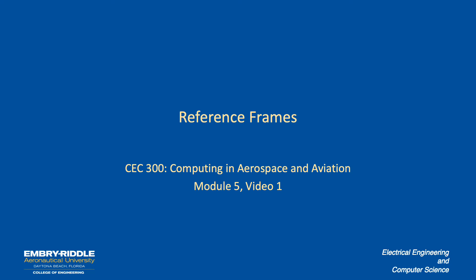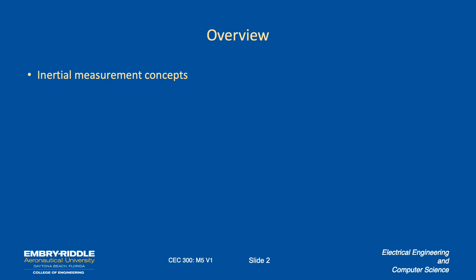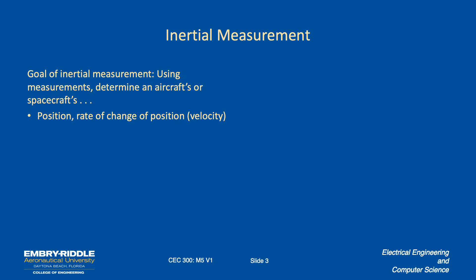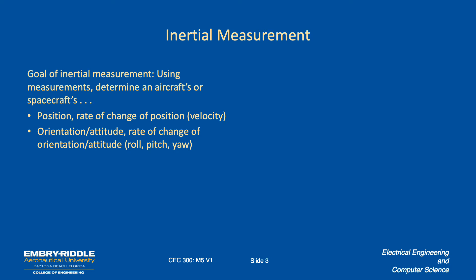In this video we're going to talk about reference frames used in aviation. We want to do this so we can talk about inertial measurements — an overview of inertial measurement concepts — then we'll talk about reference frames and the coordinate systems associated with them, and then we'll talk about the geometry of the earth. The next videos will cover going back and forth between different reference frames. The whole idea of inertial measurement is to measure position, rate of change, and things like that, so we can determine an aircraft's or spacecraft's attitude, position, orientation, and how fast those are changing.